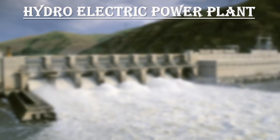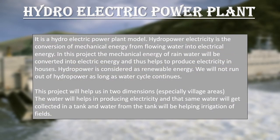Hydroelectric power plant — let's see what exactly it is. Basically, it's a hydroelectric power plant model. Hydropower electricity is the conversion of mechanical energy from flowing water into electrical energy. In this project, the mechanical energy of rainwater will be converted into electrical energy, and thus helps to produce electricity in houses. Hydropower is considered a renewable energy, so we will not run out of hydropower as long as the water cycle continues.